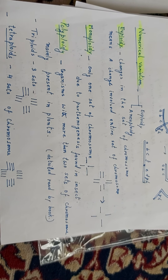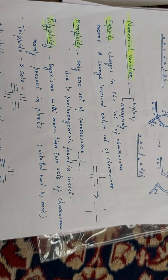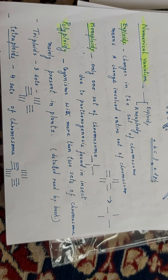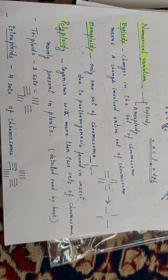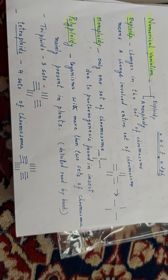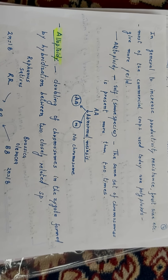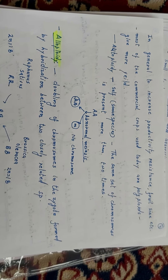Next topic is numerical variations — euploidy and aneuploidy. Euploidy: changes in the set of chromosomes means a change involves the entire set of chromosomes. Haploidy — monoploidy — only one set of chromosomes, due to parthenogenesis, found in insects. Polyploidy — organisms with more than two sets of chromosomes — mainly present in plants. Triploid has three sets; tetraploid has four sets of chromosomes. Most commercial crops used today are polyploid and give more yield.